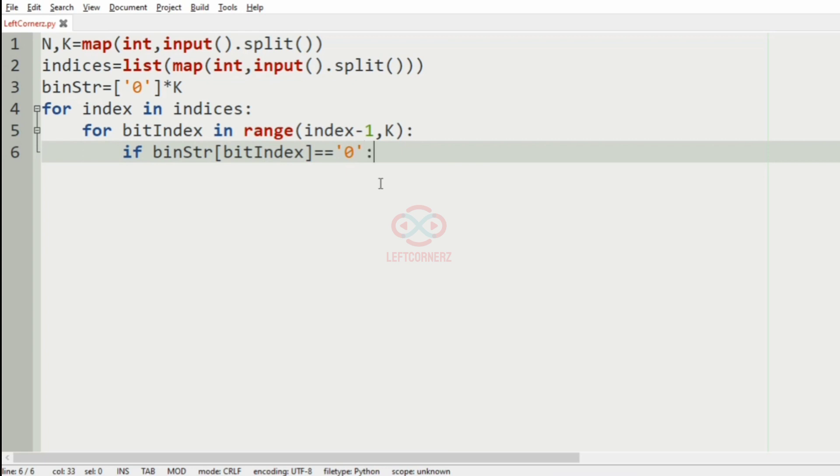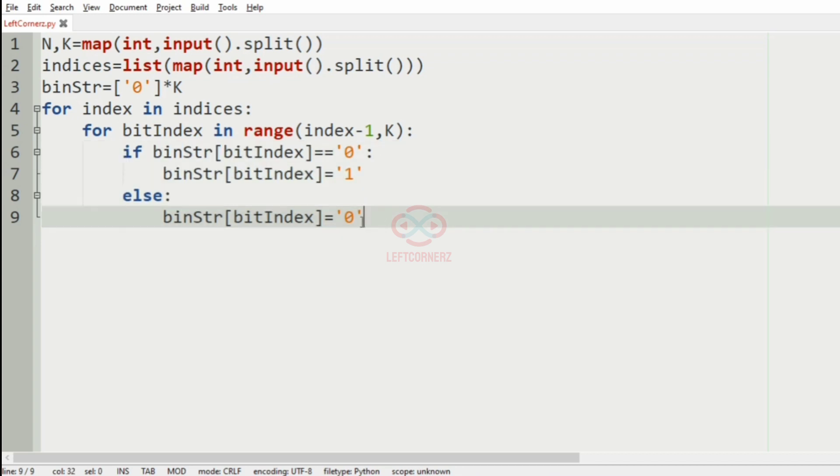That is if the binary string of the bit index is equal to zero, then we have to change the binary string of bit index as one. And in the else part we'll have the binary string of the bit index as zero.